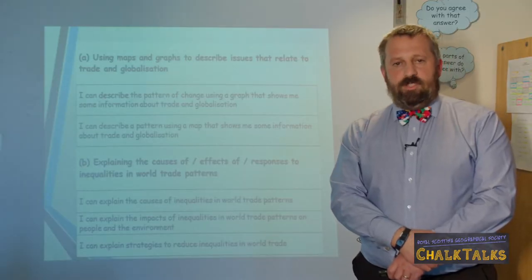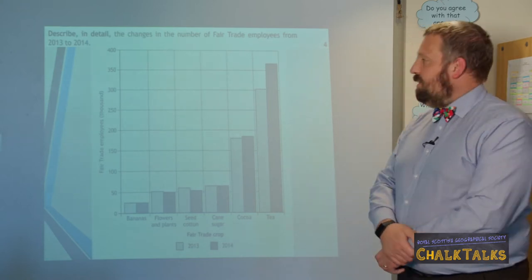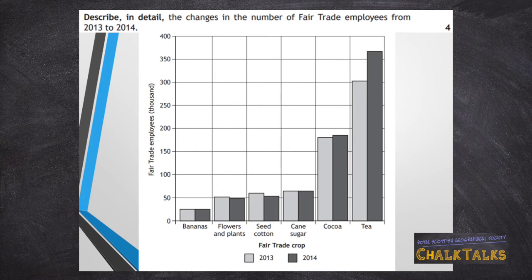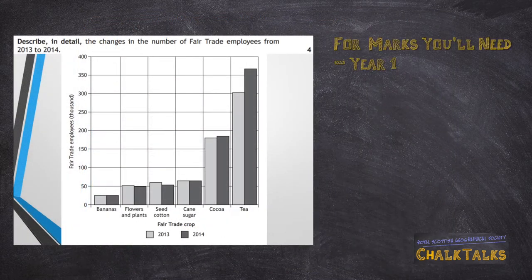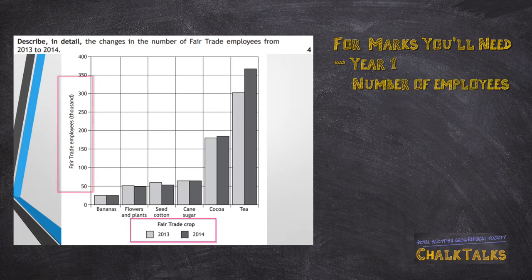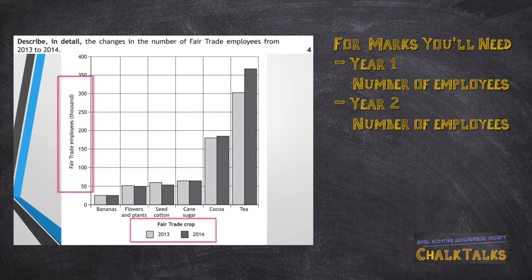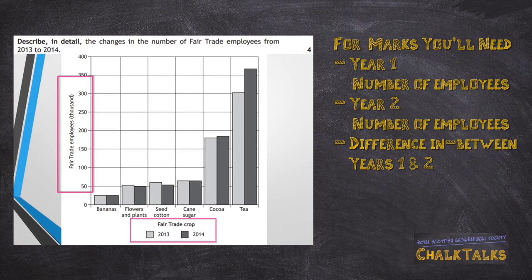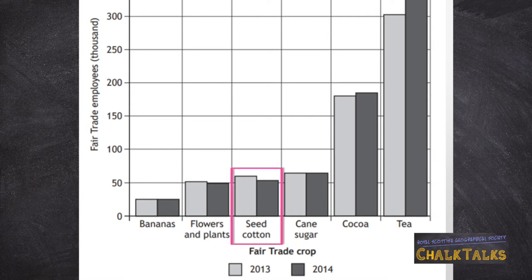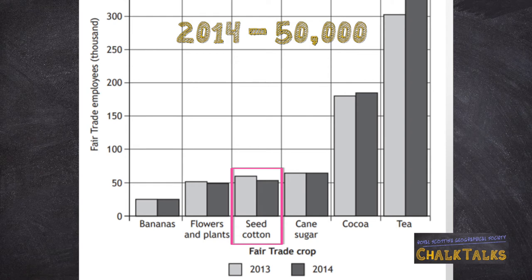Let's have a look at some Part A questions. Sometimes you'll be presented with a question about a graph. In this case, the question says: describe in detail the changes in the number of fair trade employees from 2013 to 2014. In order to pick up marks for a question of this type, you will need to give the year, the number of fair trade employees from that year, and then a second year and the number of employees from that year, and also give the difference between those two figures and say whether it has increased or decreased. For example, for seed cotton, the number of employees in 2013 was about 60,000, but in 2014 this had decreased to just over 50,000, which was a fall of about 10,000.